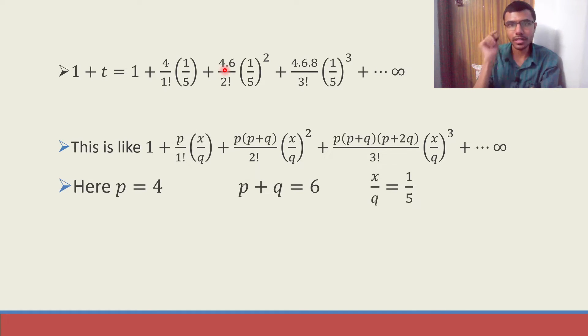So those things I just put it down here. p is 4. With this I can get q. Just put 4 + q = 6 and q will be equal to 6 - 4 which is nothing but 2.